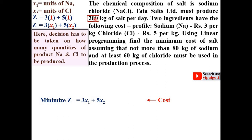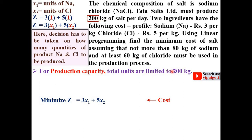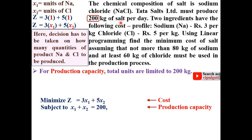The constraint is that Tata Salt Limited must produce 200 kg of salt per day — that is the exact requirement. For production capacity, total units are limited to 200 kg. So the first constraint is x1 + x2 = 200, because salt contains both sodium and chloride and their total weight must be exactly 200 kg.